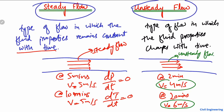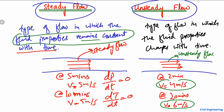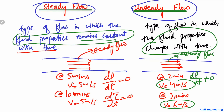So this is the main difference between these two types of flow. When the properties of the fluid are not changing with time but remain constant, it is known as steady flow. But when the properties of the fluid change with time, we call it unsteady flow. Similarly, when the pressure changes with time it is unsteady flow, and when the temperature property is changing with time, it is also known as unsteady flow.